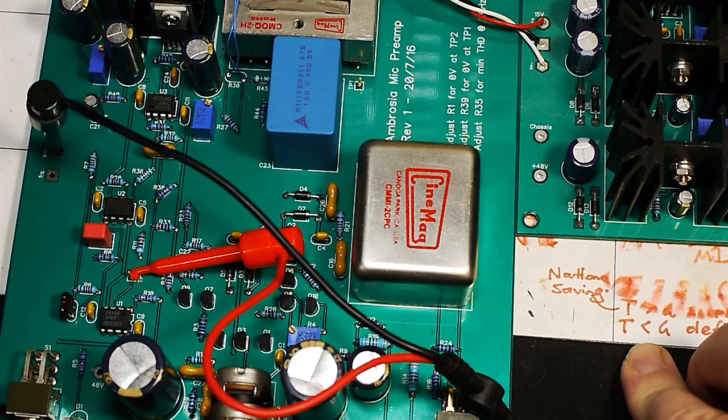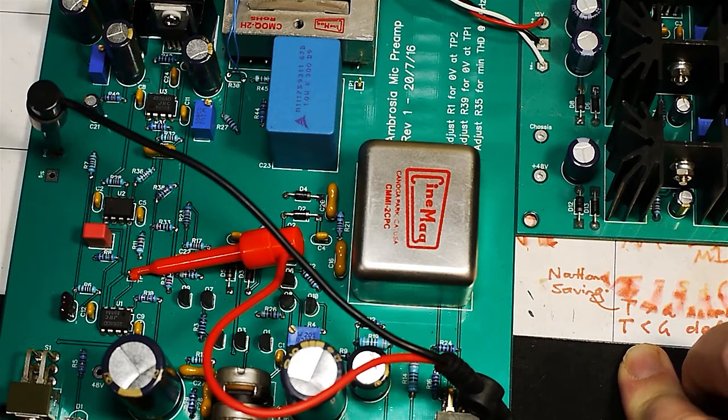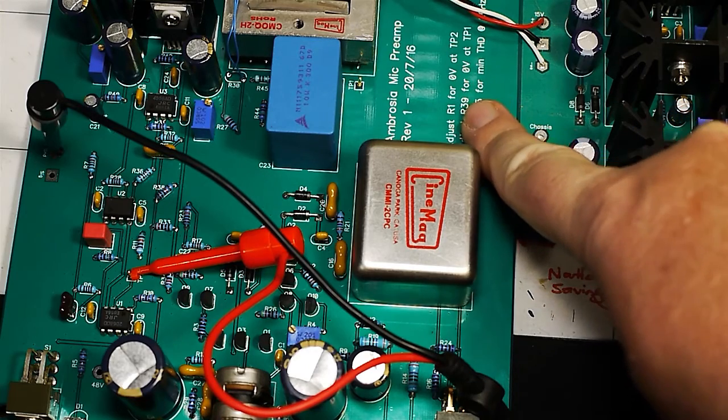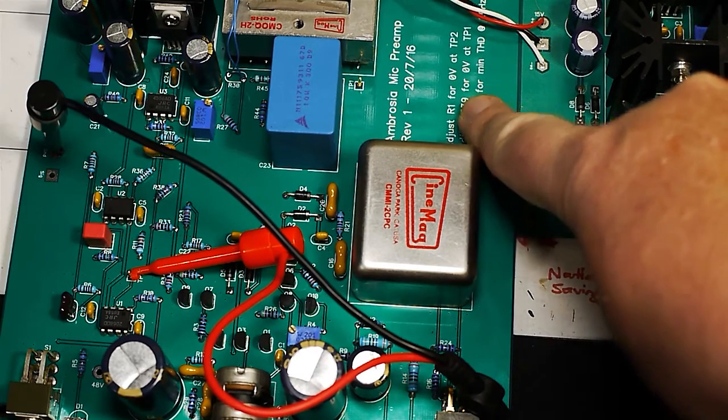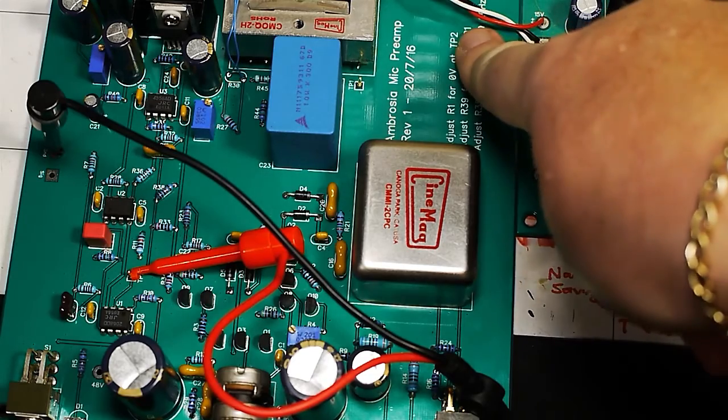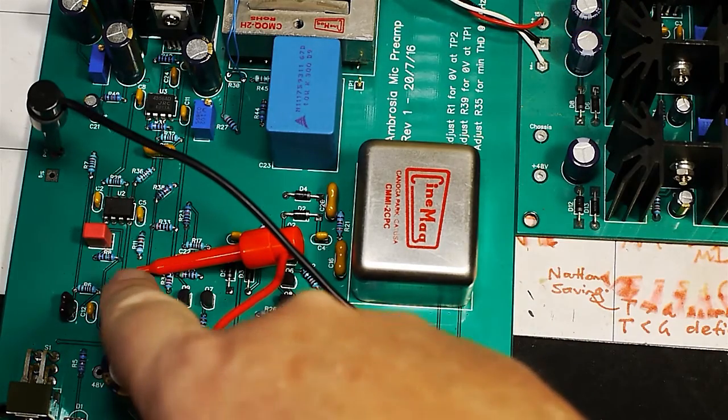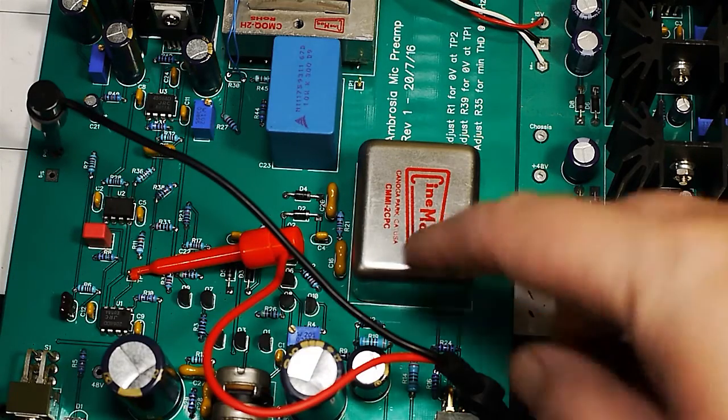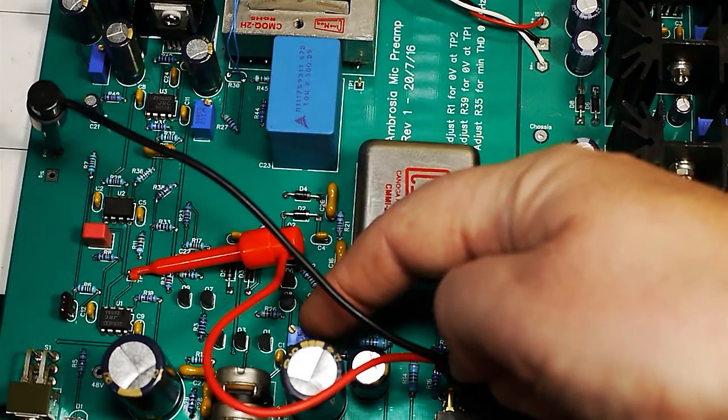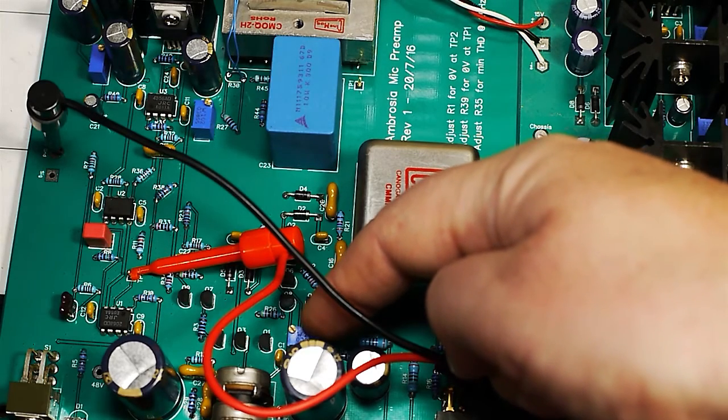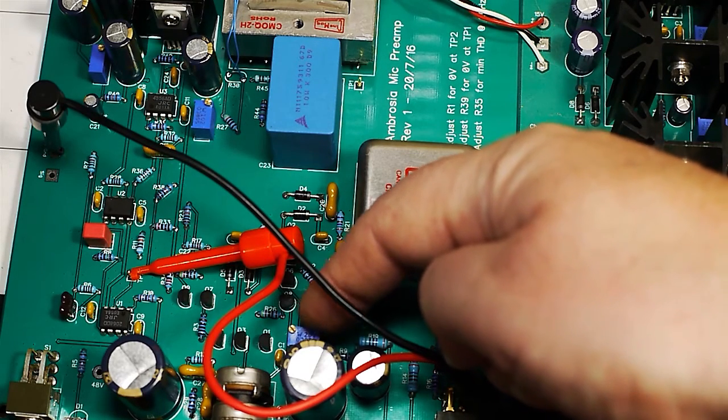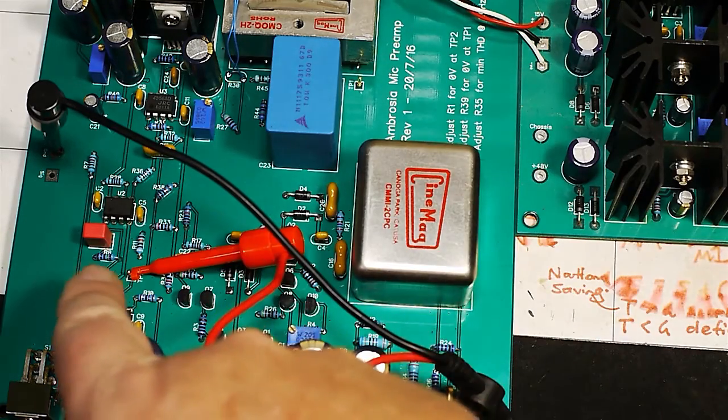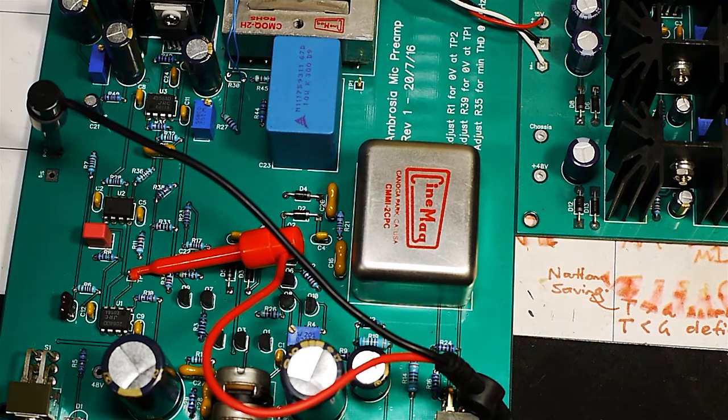Before we press on any further, I want to adjust out some of the DC offset. Our first adjustment is R1 for zero volts at test point number two. I've clipped onto test point two and ground. What R1 actually does is adjust the current through one leg of the differential amplifier.